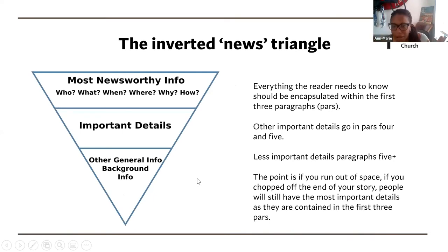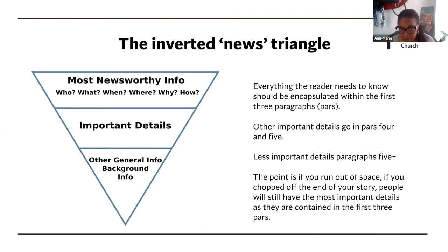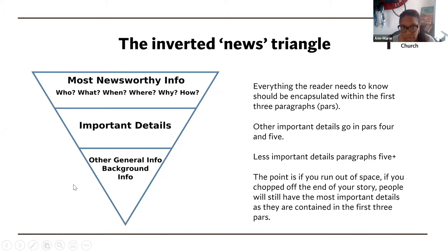If you remember, we looked at the news triangle. Everything in the leading news should ideally be in the first three paragraphs covering those five W's. More important information can go in paragraphs four and five, and less important details further down in our story. The reason for this is that if you run out of space or something more important comes into your newsletter and you have to chop information from the story, you can just chop from the bottom of the triangle and you'll still have all the important information at the top.